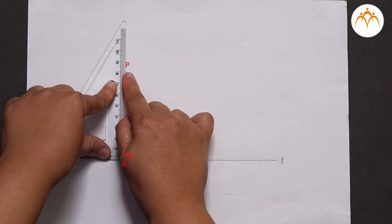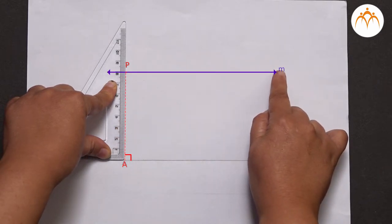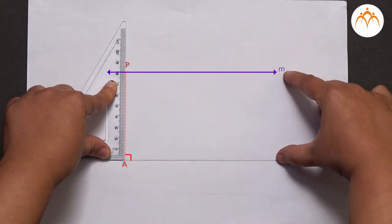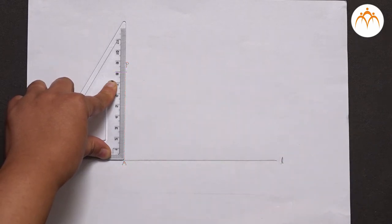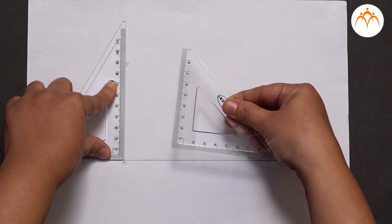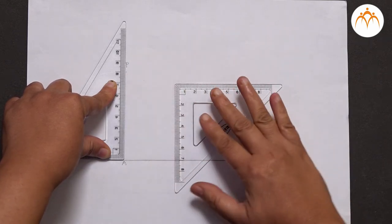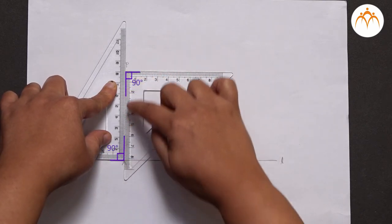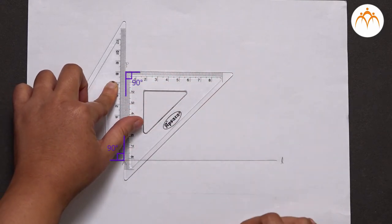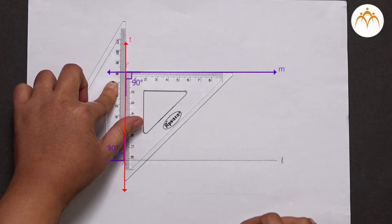If we draw a new line M passing through point P such that this distance PA remains equal, this new line M will be parallel to the given line L. For this, we take the 45-45-90 degrees set square and place it in such a way that this point is on the point P. You can see that these two perpendicular edges are now touching each other, so that if we draw a new line M passing through point P and a transversal T along the touching perpendicular edges, we get a pair of interior alternate angles which are congruent. Hence, according to the alternate angles test of parallel lines, the new line M will be parallel to the given line L.